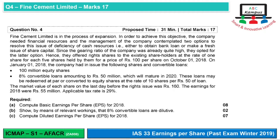First of all, we will calculate basic EPS and show the relevant working. Then, we check whether the convertible loans are dilutive by calculating incremental EPS. Finally, we compute diluted EPS. The first two parts are solved; the third part will take 1-2 minutes.